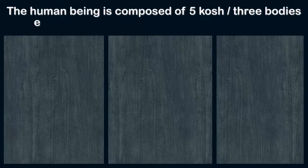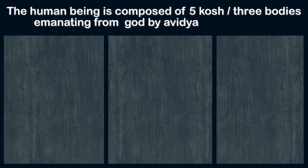The human being is composed of five kosh or three bodies emanating from God by avidya or ignorance.